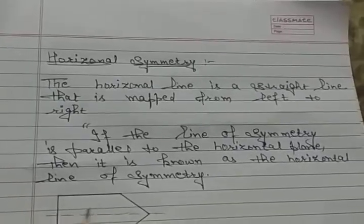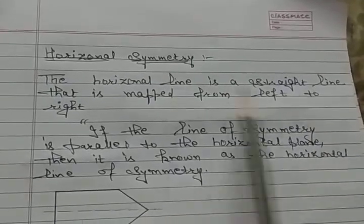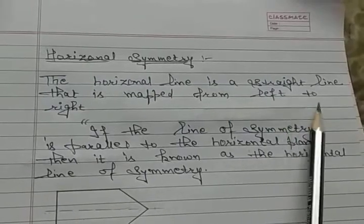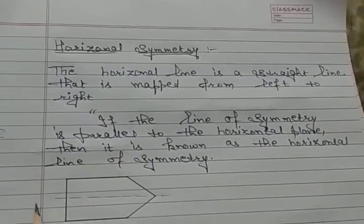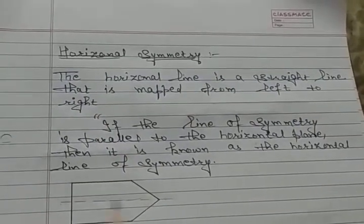Now horizontal symmetry. The horizontal line is a straight line that is marked from left to right.